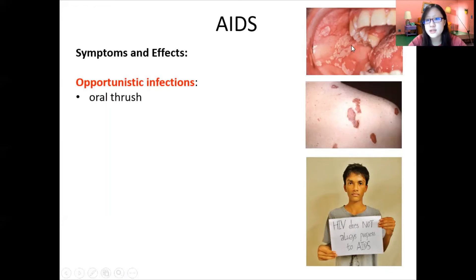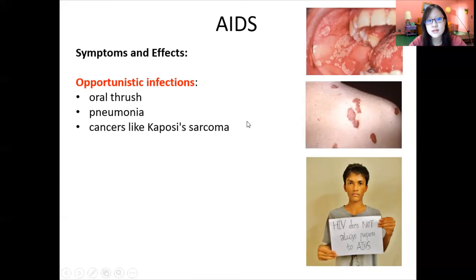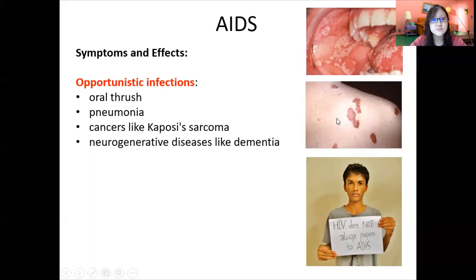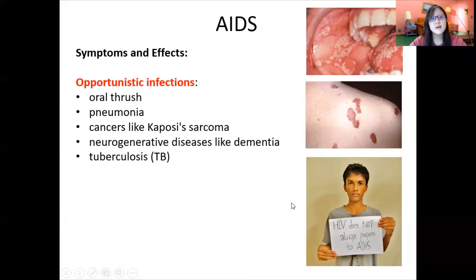Opportunistic infections that can occur when a person has AIDS include: oral thrush — inflammation and infection of the mouth with many painful ulcers; pneumonia — infection of the lungs; cancers like Kaposi's sarcoma, which appears as spots and tumours on the surface of the skin; and neurodegenerative diseases like dementia, as well as tuberculosis and malaria.